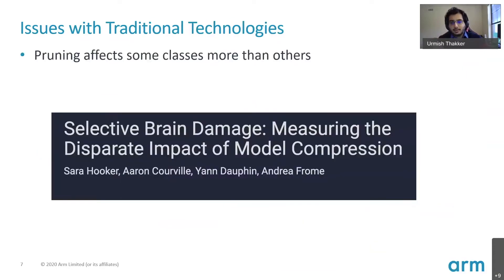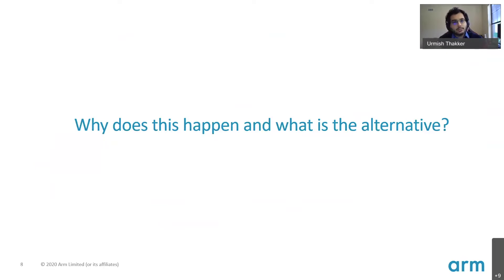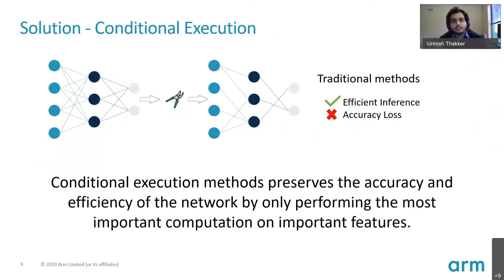We are seeing limitations with these techniques. As you keep pushing static compression to its limits, accuracy starts falling off. A paper from Google explored static compression techniques and found they insert a certain bias into the model — if your dataset has multiple classes, static compression techniques favor certain classes more than others. As a result, your compressed neural network would have higher accuracy on certain classes and lower accuracy on others. This got us motivated to ask why this happens and how we can solve it, which is where we started exploring dynamic inference or conditional execution technologies.